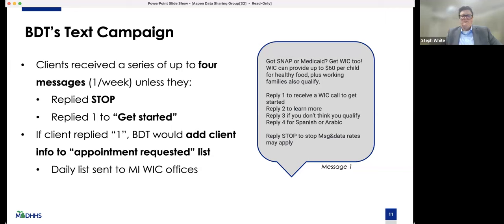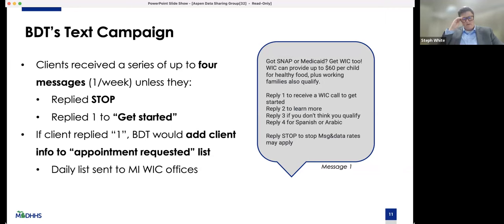In the sample text message, reply 4 for Spanish or Arabic — that was a new thing we tried, to let people know straight from the beginning. This is like removing the burden from them: we'll take care of the translation, just reply 4 and we can get you to Spanish or Arabic. Those are the two biggest languages spoken in Michigan outside of English. And then obviously, clients who replied that yes, they wanted to know more were sent to the WIC office.